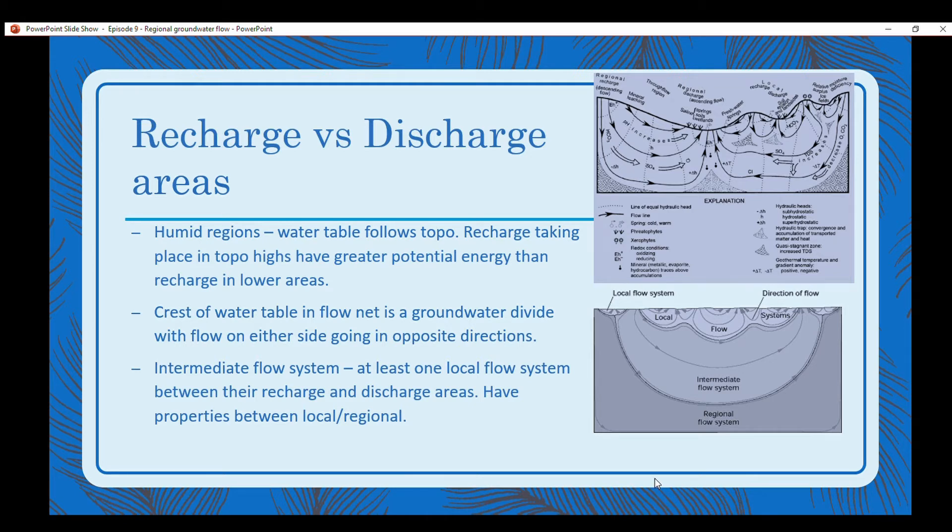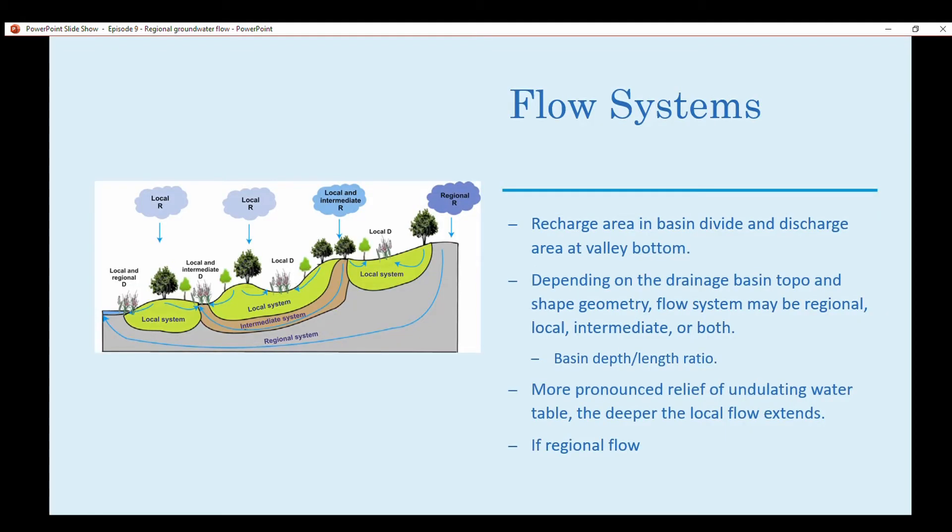This is a good picture of a local flow system. Recharge area in the basin divide and discharge area at the valley bottom is talking about a regional. It occurs here on the mountain front or top of the hill, and it slowly makes its way to what is basically a lake or a river. When you're talking about a local system, it's very small flow paths and close to the surface.